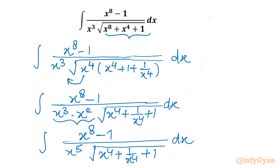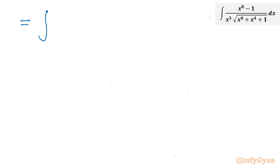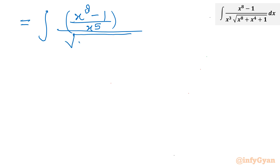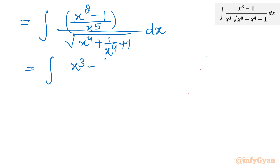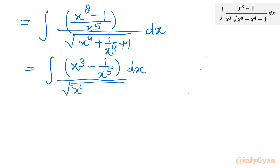Now I will consider the division with x^5. The numerator x^8 - 1 will be divided by x^5. So I will write equal to integration (x^8 - 1) divided by x^5, over the square root of x^4 + 1/x^4 + 1, dx. Now split the numerator, so I will write integration (x^3 - 1/x^5) times dx over the square root of x^4 + 1/x^4 + 1.